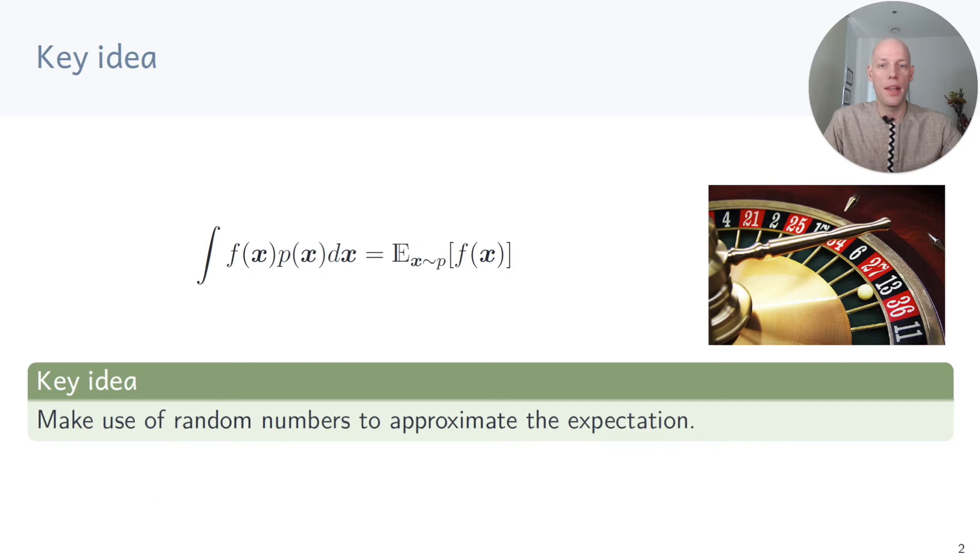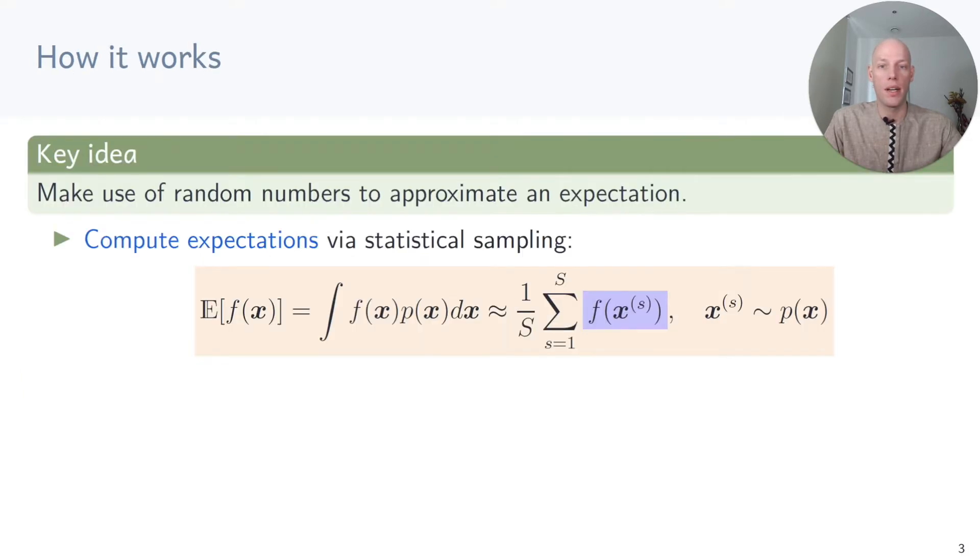The key idea behind Monte Carlo estimation is to make use of random numbers to approximate the expectation. And here is how it works. We compute the expectation via statistical sampling. If we draw samples from p of x, we evaluate f at those samples, sum the function values up, and divide by the number of samples.